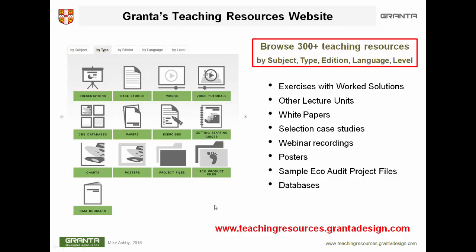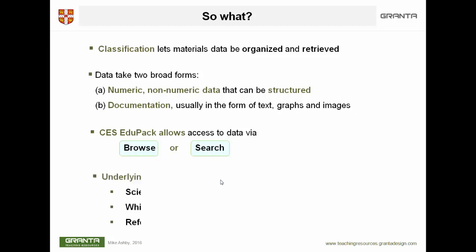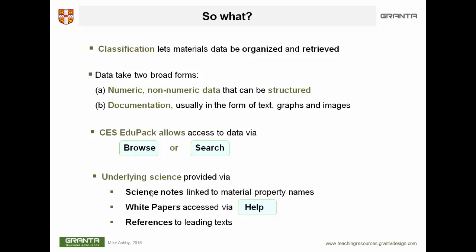That brings me to the end of this first introductory lecture. To summarize: classification is important — it gets materials data in an organized manner that can be easily retrieved. The data takes two broad forms, both useful: numeric structured data, and text, images, and graphs which we call documentation. Finding records can be done by browsing or by searching. And finally, the underlying science is provided via science notes, papers accessible from the help file, and references to leading texts.